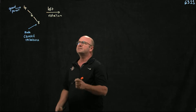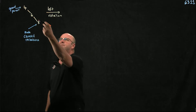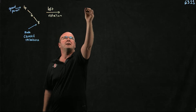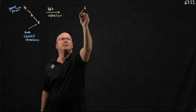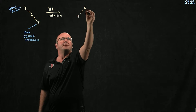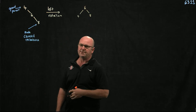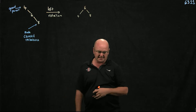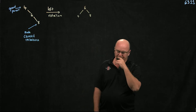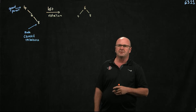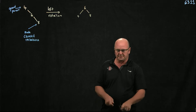So we do a left rotation of the 4 around the 6, and we end up with a balanced tree: 4, 6, and 8. That's a left rotation.